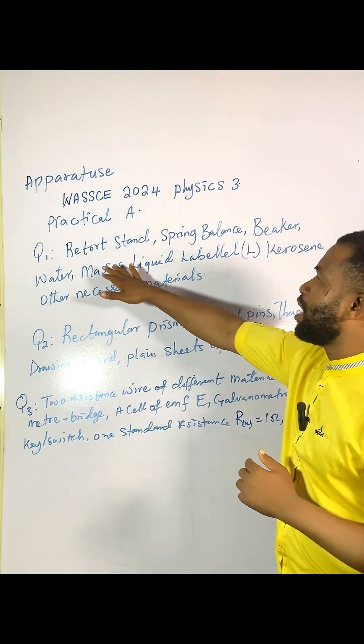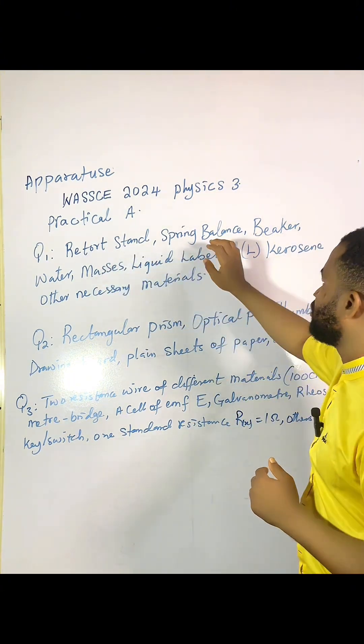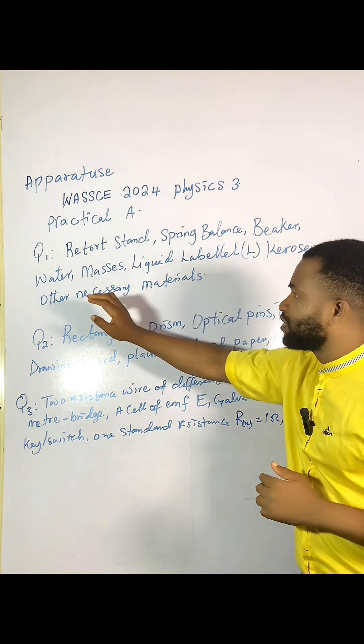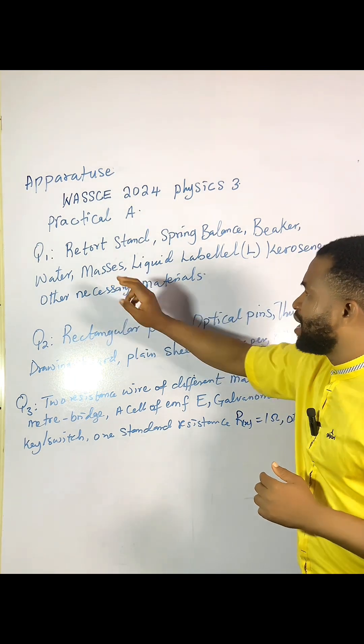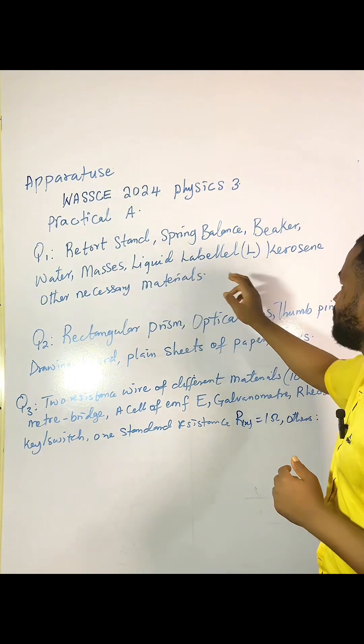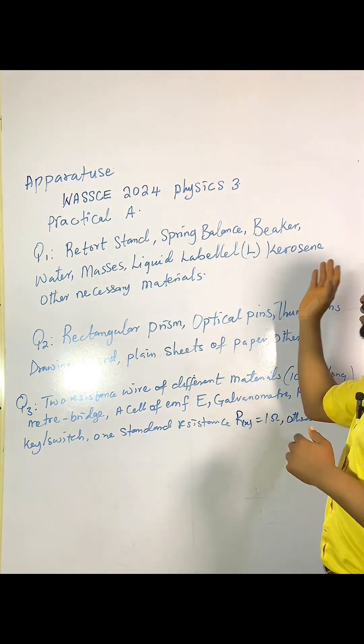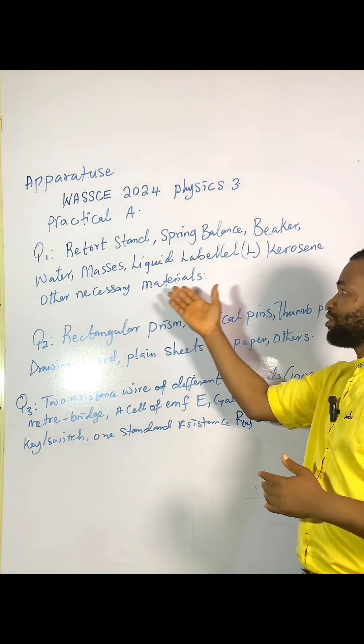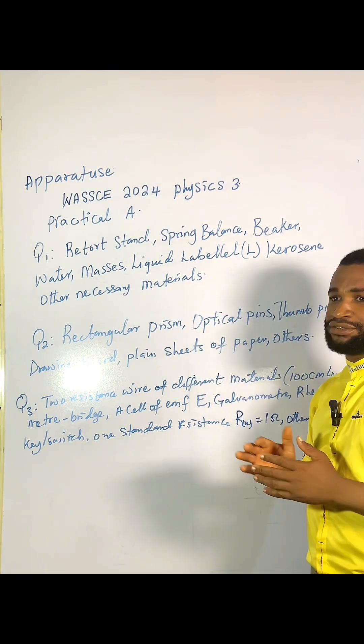For experiment number one, we have a Rheostat, Spring Balance, Beaker, Water, Masses, and a Liquid labeled L — which is kerosene — and other necessary materials.